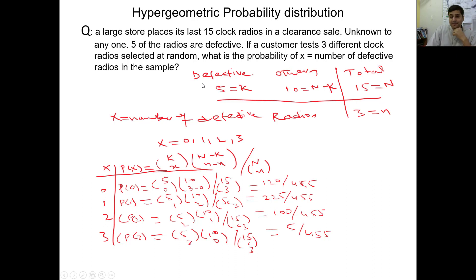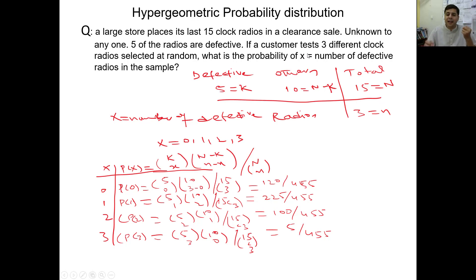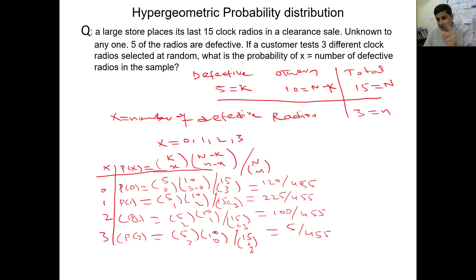This is hypergeometric because the trial is without replacement. When the customer chooses one radio from those 15, he or she will not put it back — they randomly select and take it. So when one radio is taken, the remaining radios change. This is without replacement, which is the identification that this is not a binomial distribution. From this specific indicator, we decide that we will use hypergeometric probability distribution.